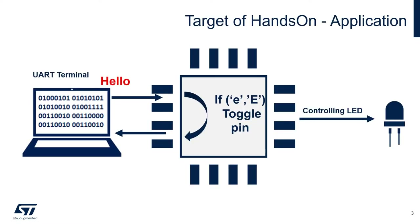This is the top view of the application we want to develop. We're going to have a UART terminal, and every time we send a character, it will be sent back to the terminal. The STM32C0 is going to recognize what character has been typed, and if it is an uppercase E or lowercase E, it will toggle the LED on your Nucleo board.